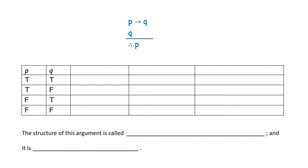The argument structure P → Q, and Q, therefore P can be written as [(P → Q) ∧ Q] → P. We use a truth table to determine validity. The truth values for P → Q are: true, false, true, true. For the conjunction (P → Q) ∧ Q: true ∧ true = true; false ∧ false = false; true ∧ true = true; true ∧ false = false.